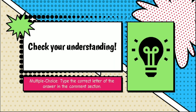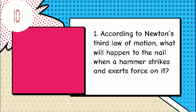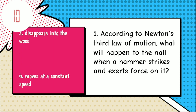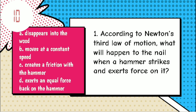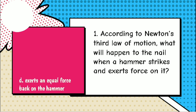Now let us check your understanding by answering this multiple choice evaluation. Just type the correct letter in the comments section. You have 10 seconds to answer each. One: according to Newton's third law of motion, what will happen to the nail when a hammer strikes and exerts force on it? A) disappears into the wood, B) moves at a constant speed, C) creates friction with the hammer, D) exerts an equal force back on the hammer. Type your answer. If your answer is letter D, exerts an equal force back on the hammer, you are correct.